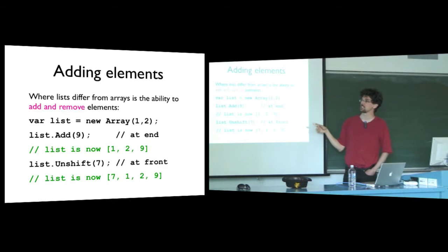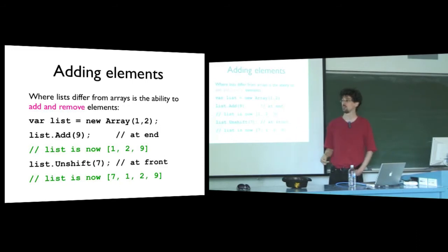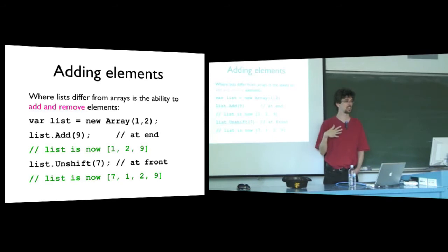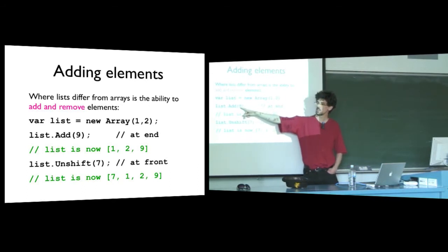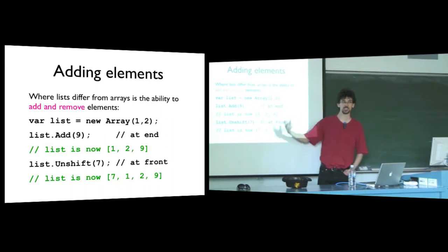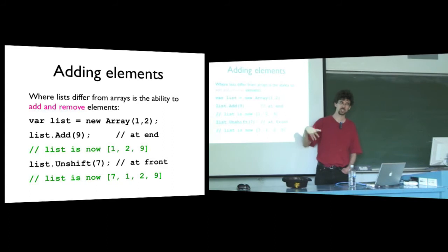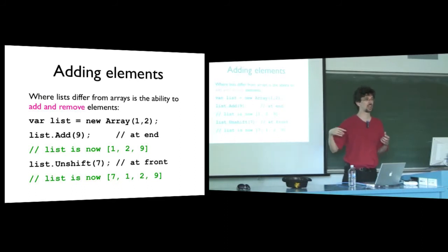The main difference is that a list has the ability to add and remove elements. There are two methods for adding and two for removing. We can add either at the beginning or at the end of the list. The 'add' method puts elements at the end of the list. So starting with (1, 2), if we call list.add(9), we get (1, 2, 9). The 'unshift' method — the opposite of shift — adds at the front of the list. So if we call unshift(7), we get (7, 1, 2, 9). There's no way to insert a value into the middle of the list, which is unusual — Unity just doesn't have that.